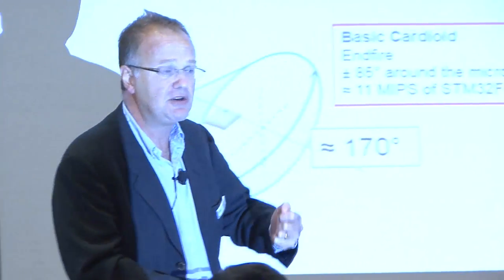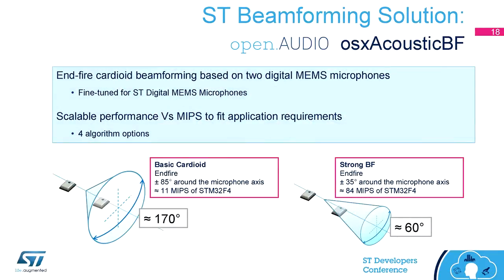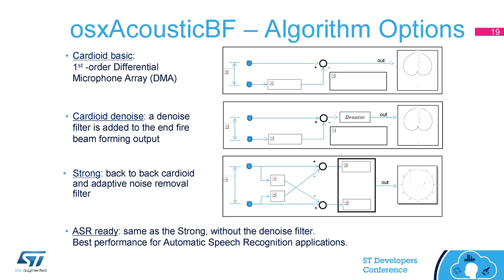Our library can also implement an end-fire configuration with what we call strong beamforming, where we are listening in the direction along the axis of the microphones, with an aperture of roughly 60 degrees. We have four different implementations of beamforming: the basic cardioid and the strong one, plus other degrees well documented in the technical documentation. One specific kind in this library is called ASR-READY, optimized for speech recognition applications.